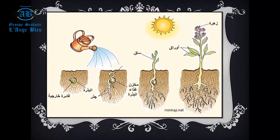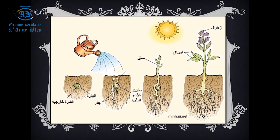إذا لاحظتم معي هذه الصورة جيداً، كيف يمكن لي الحصول على نبتة جديدة؟ من خلال البذرة، نعم. أقوم بزرعها وسقيها وبعد مدة معينة أحصل على نبتة جديدة. إذن كيف أحصل على نباتات جديدة؟ من خلال البذور.